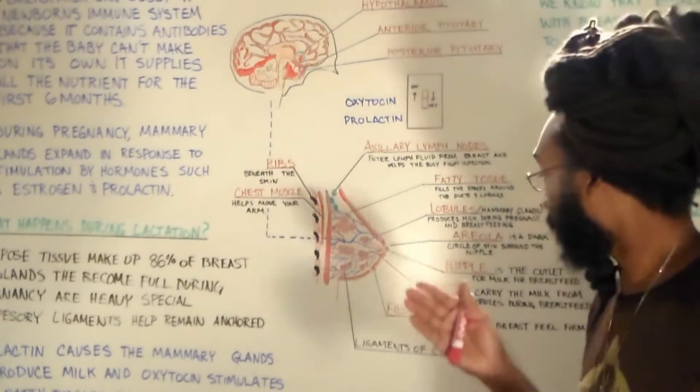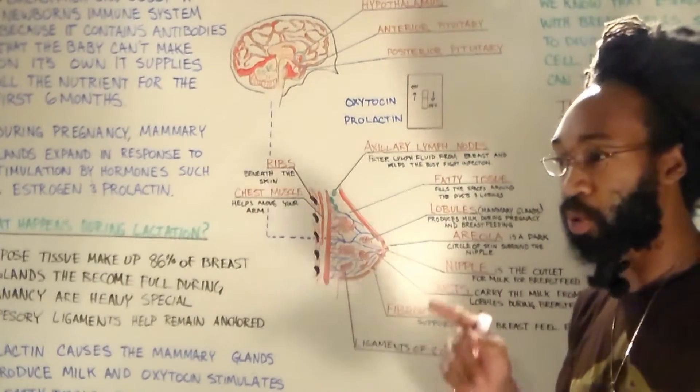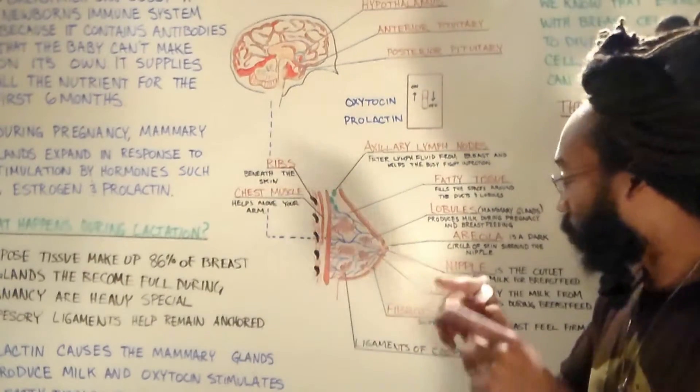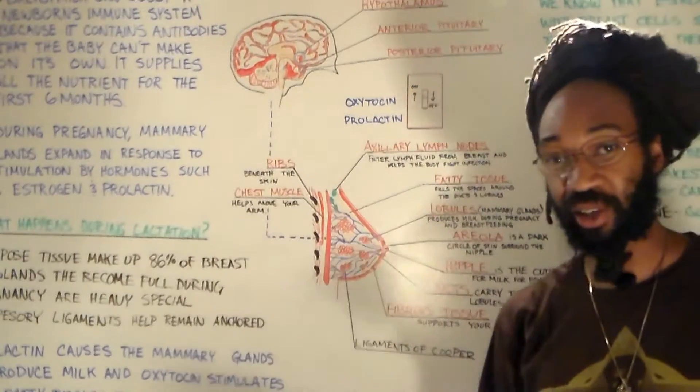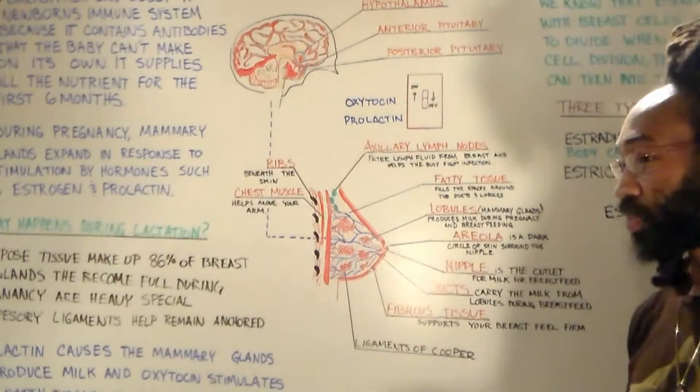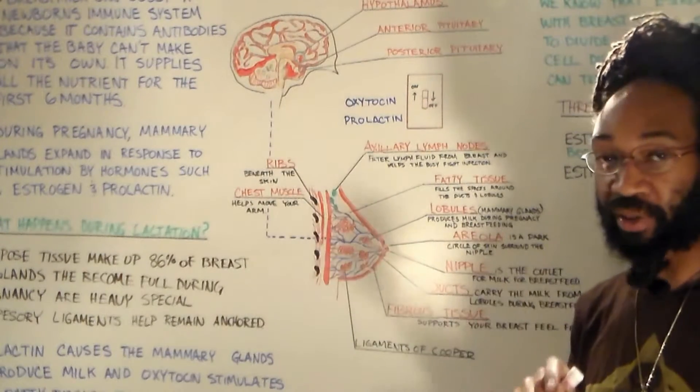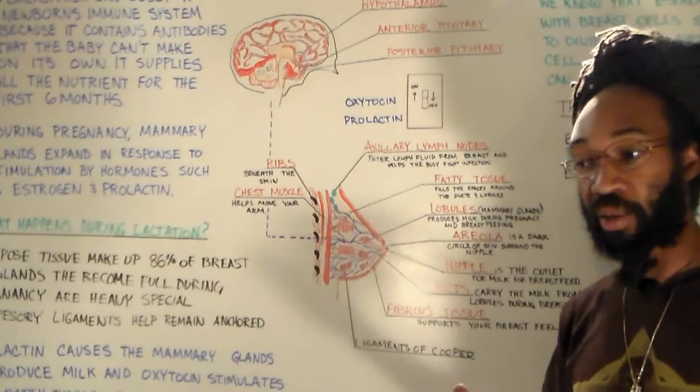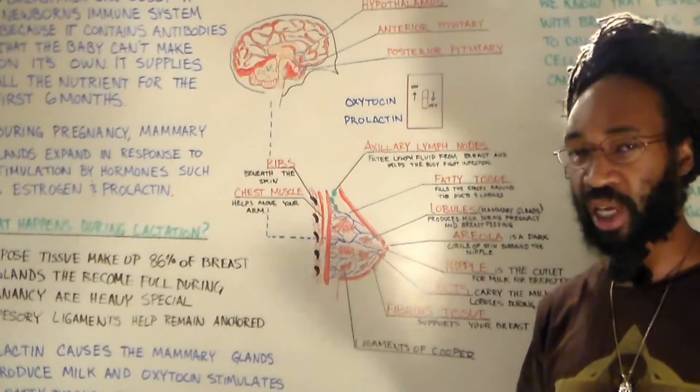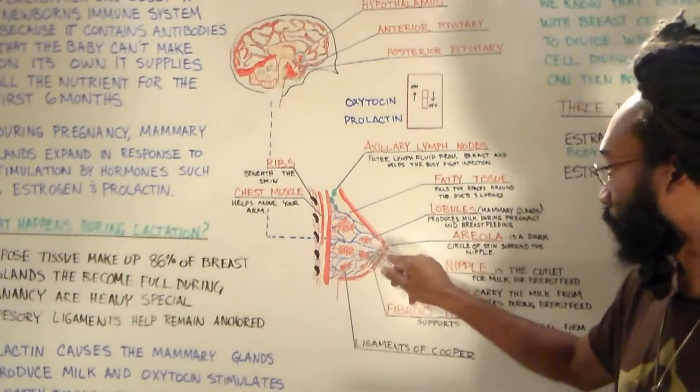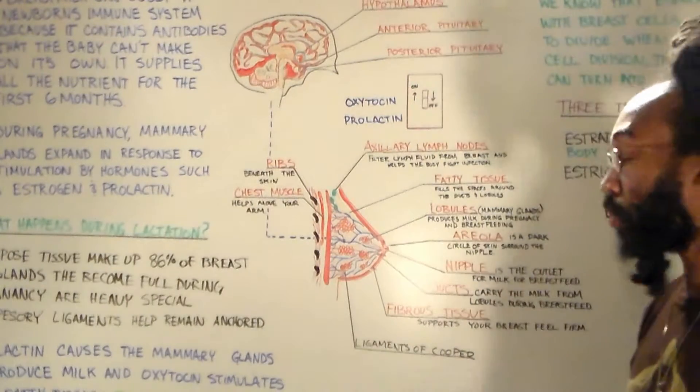But around it, this is the mechanism most people don't understand, around it there's this areola. The areola is that dark circular area that's around the nipple. But inside of the areola there's these little bumps inside of it. Those little bumps are called Montgomery glands, and any gland you know always secretes some type of fluid.